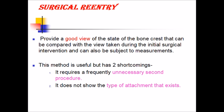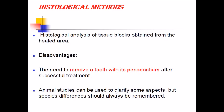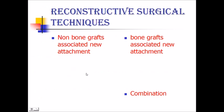The major shortcoming of surgical reentry is that an unnecessary second procedure must be done, and we cannot determine the type of attachment present. In the histological method, histological analysis of a tissue block obtained from the healed area is performed. The disadvantage is that it requires removal of the tooth with the periodontium, so it is normally done in animal studies.